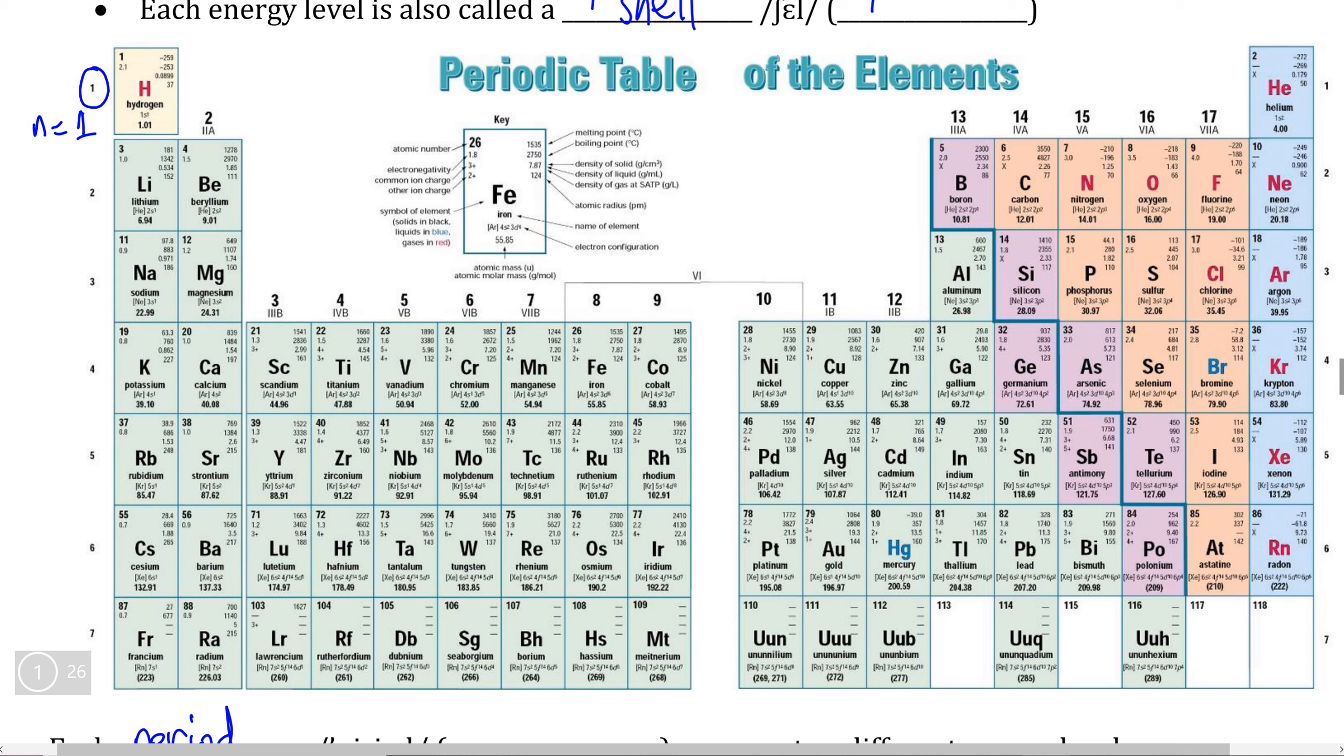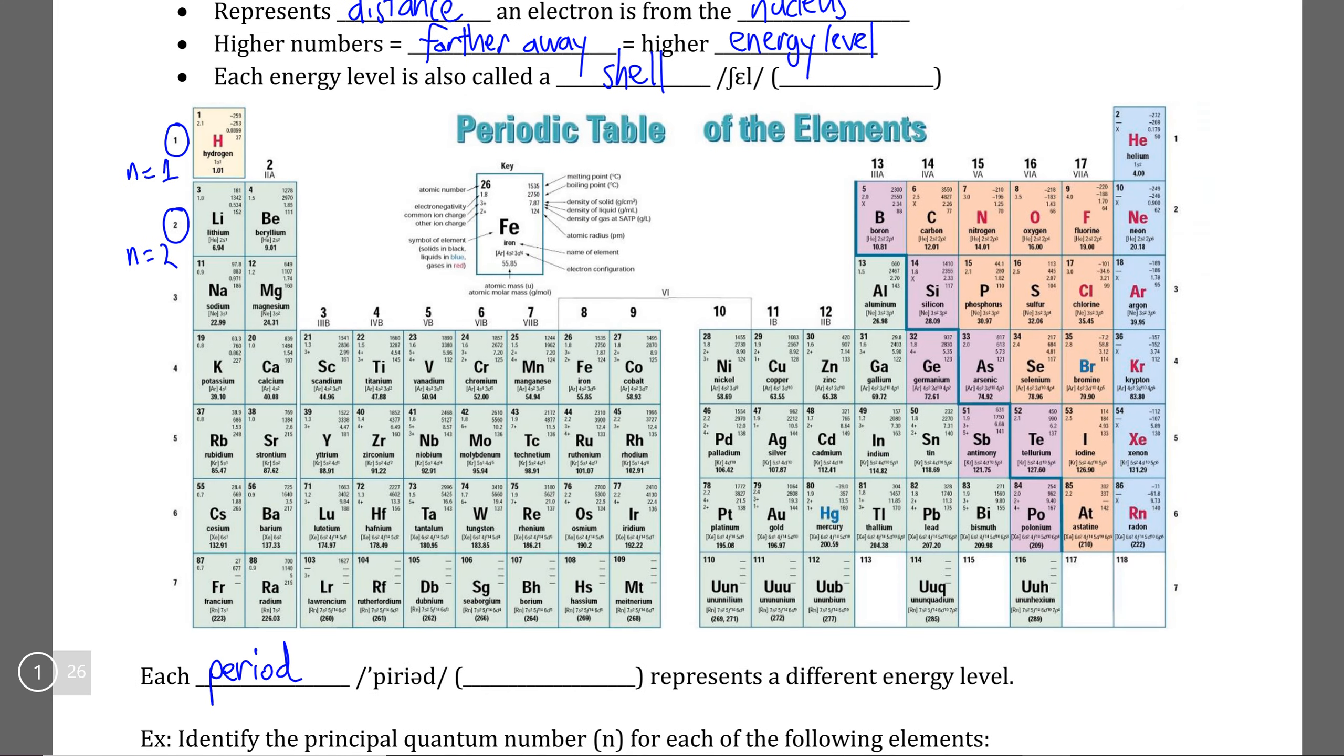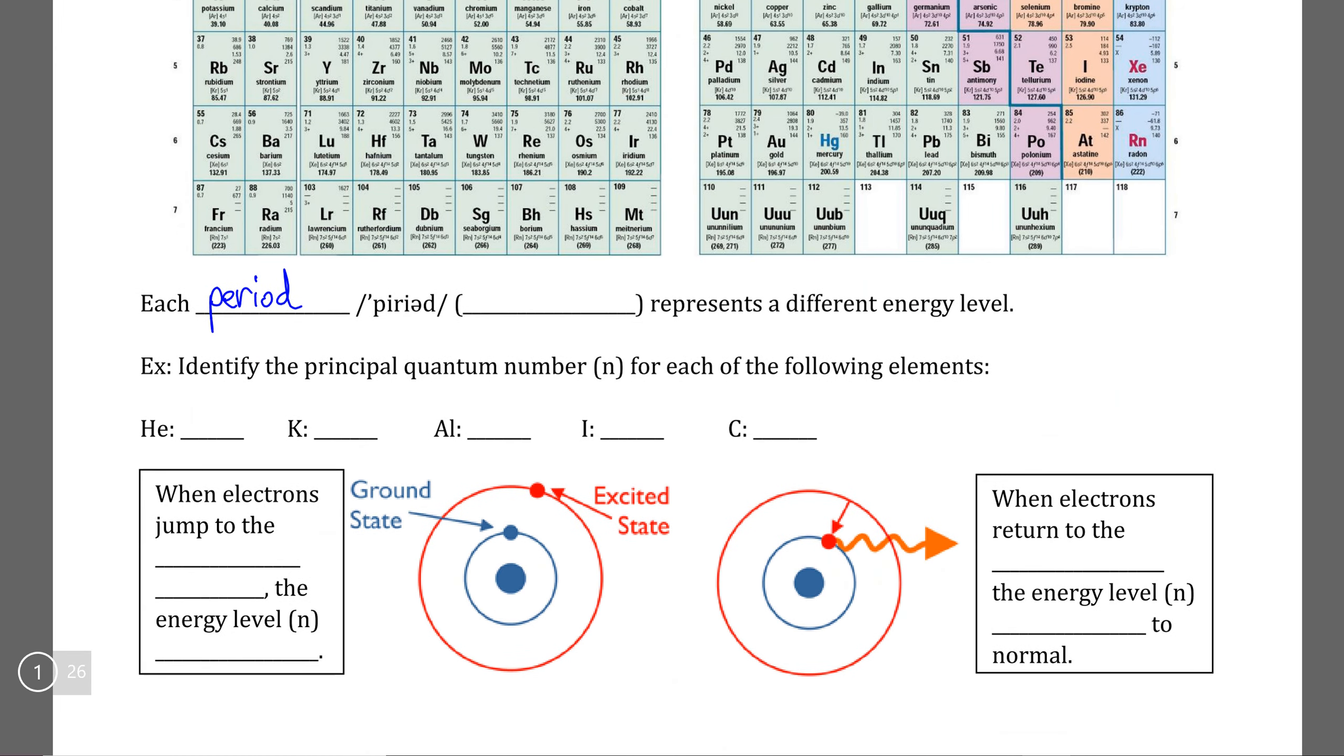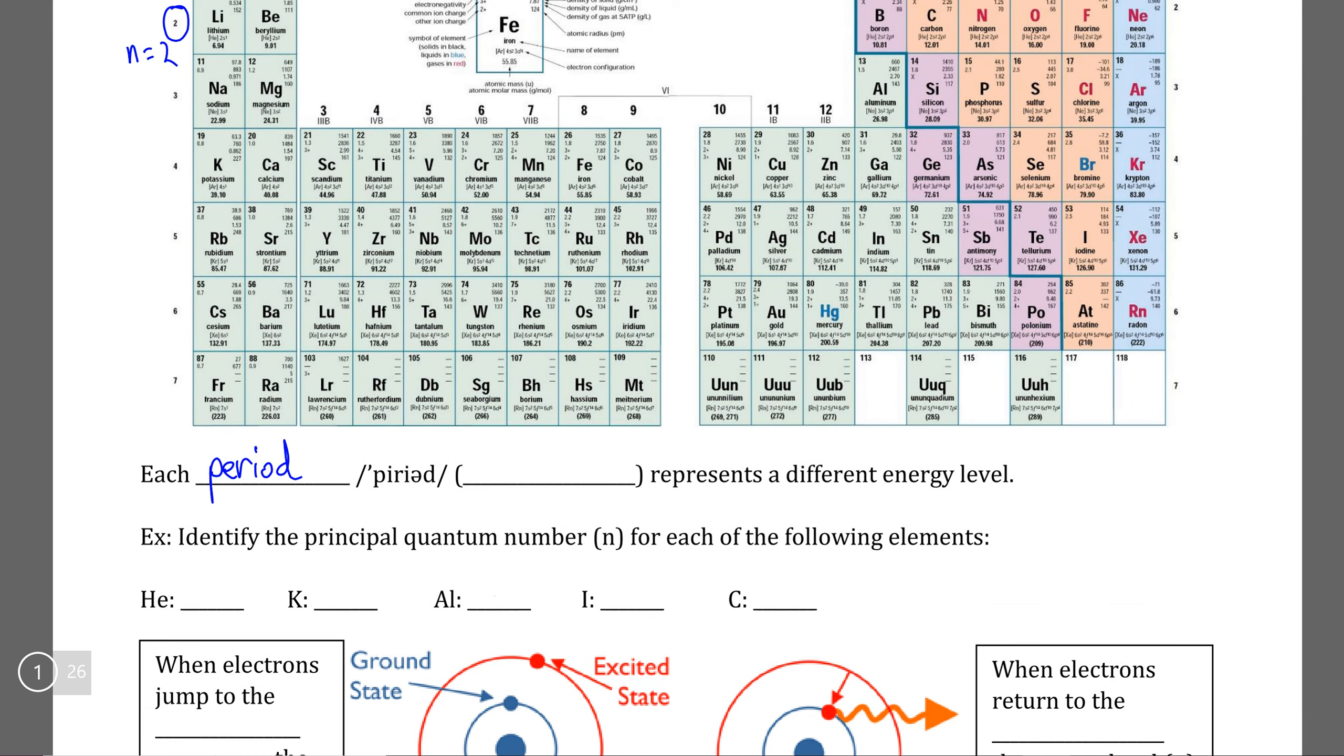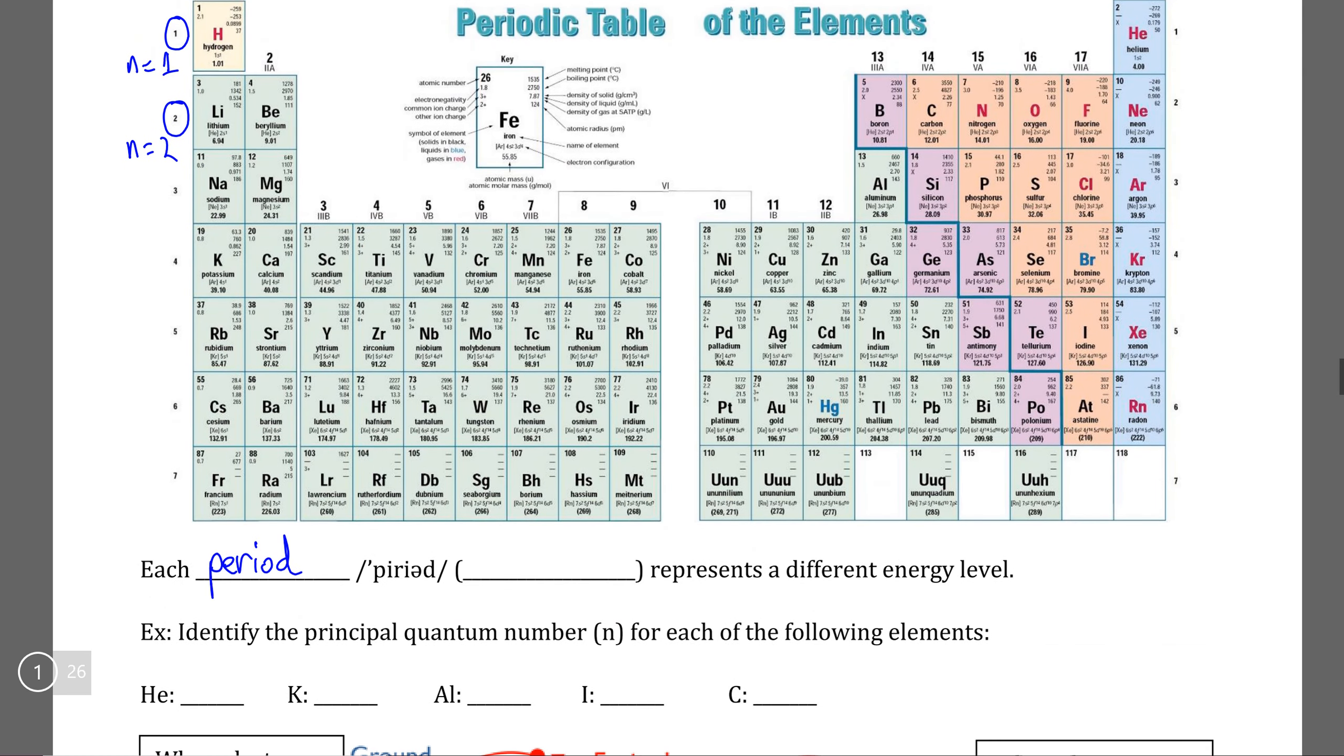The second period, with lithium, beryllium, boron, carbon, etc., is energy level two. So we call it n equals two, and so on as we go down. So if we wanted to identify the energy level that each element occupies, all we need to do is look at the period. So we already know that helium is in the first period, so its energy level is going to be one.